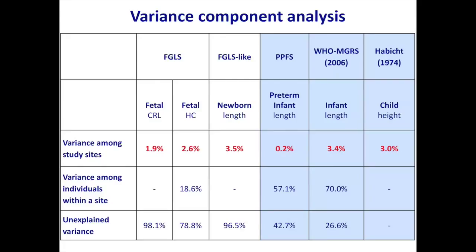Looking at the WHO study from 2006 across six countries, the variance due to between-site differences was about 3%. In our study, the variance was almost the same ballpark: for newborn length about 3.5%, fetal head circumference 2.6%, and for the very earliest measurements 1.9%. So really consistent findings across the two studies.